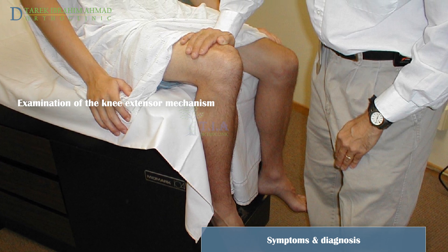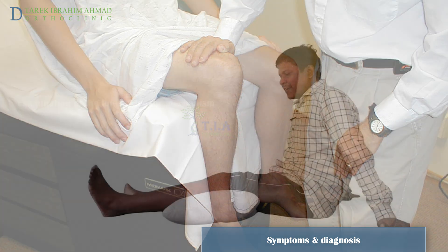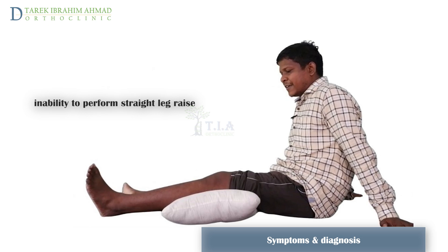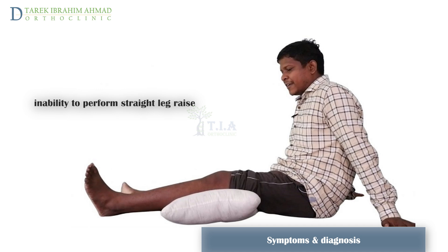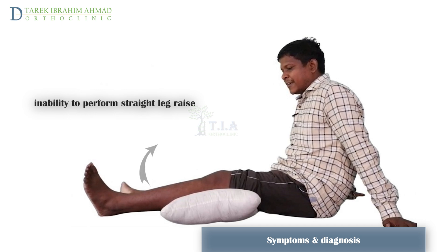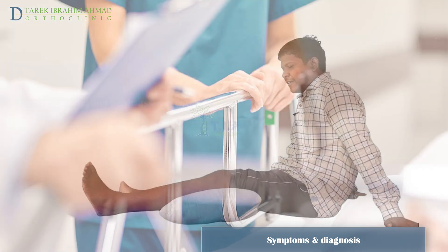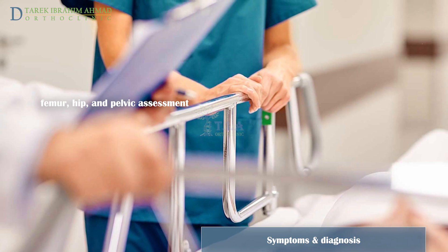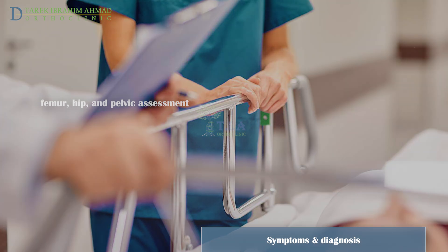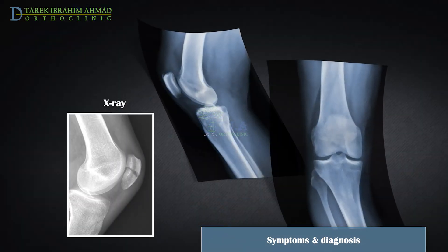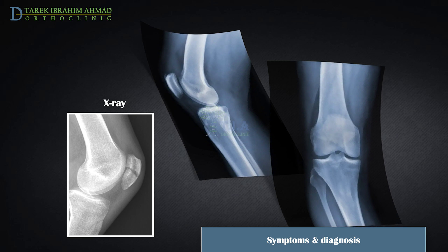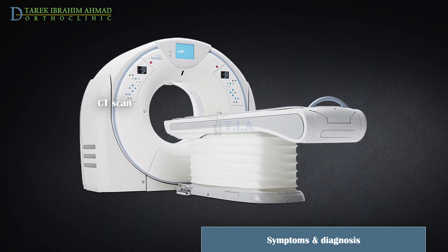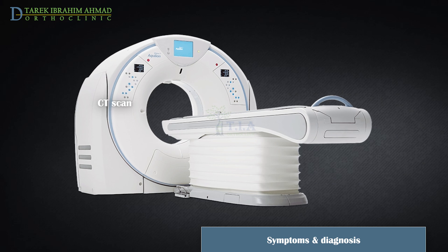It is most important that the doctor carefully assess the function of the extensor mechanism and look for any open fracture. Disruption of the extensor mechanism requires surgical repair. Intra-articular injection of analgesic may be necessary to determine whether inability to extend the knee is due to pain rather than disruption. The knee extensor mechanism can be assessed by having the patient extend the knee against gravity. The doctor must also carefully assess the femur, hip, and pelvis for injury. A patella fracture is diagnosed by X-ray, including anteroposterior, lateral, and sunrise views.